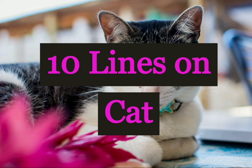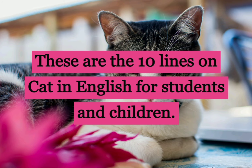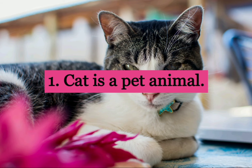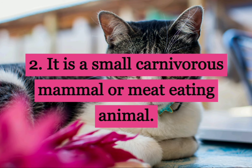Hi guys, welcome to my channel My Guide Pedia. Here are 10 lines on cat in English for students and children. Cat is a pet animal. It is a small carnivorous mammal, or meat-eating animal.